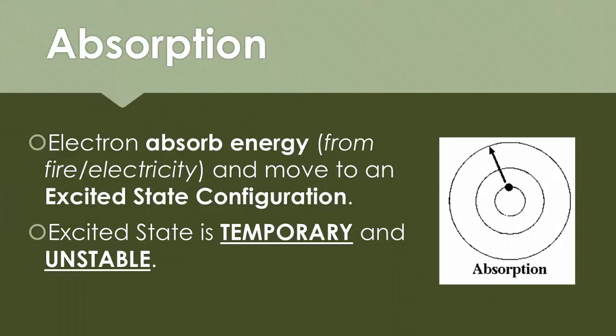First off, absorption. Like the word absorb, the electron is going to be absorbing energy from either fire, electricity, some sort of heat, even a chemical reaction, and that causes it to move up an excited state configuration. Don't forget, excited states are temporary and extremely unstable.